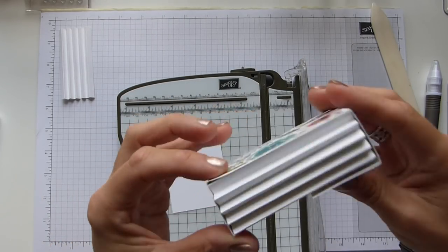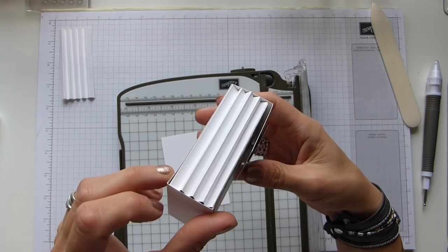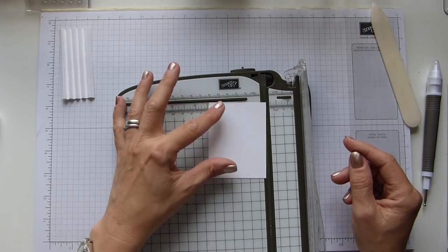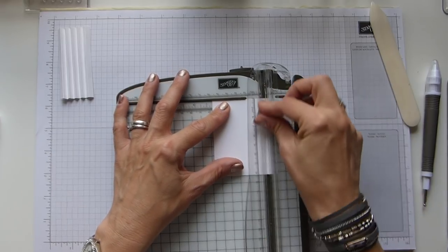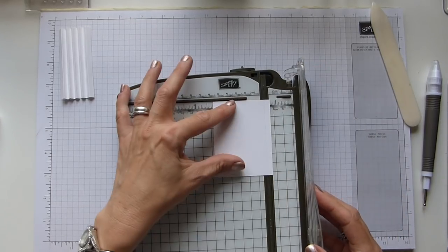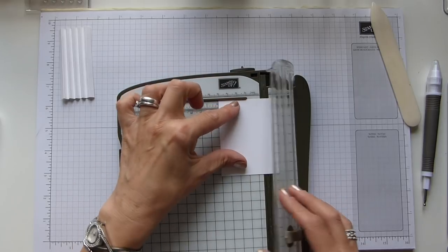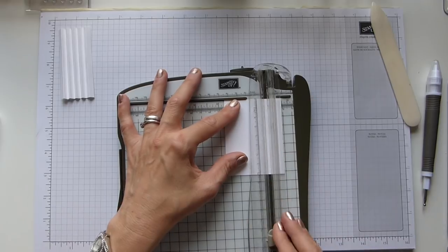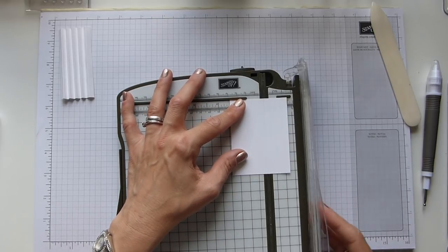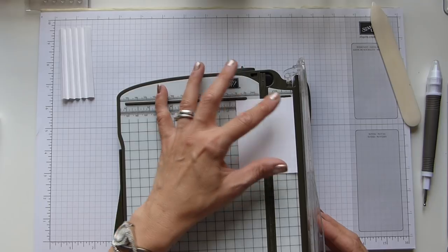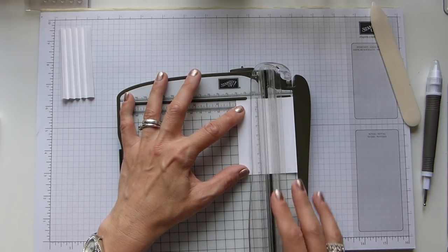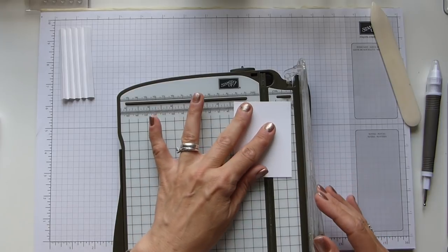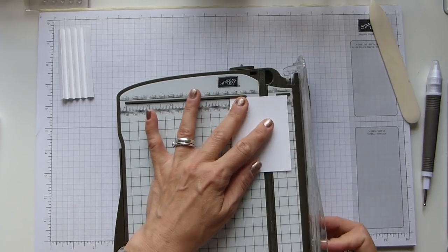I messed this up so many times, hence these score lines here. Can you see them? I messed them up so many times. On the short side, we're going to score at every quarter of an inch, and we're literally scoring every quarter of an inch, which actually is half a centimeter. So it really is a small, small score, but that's what we need.